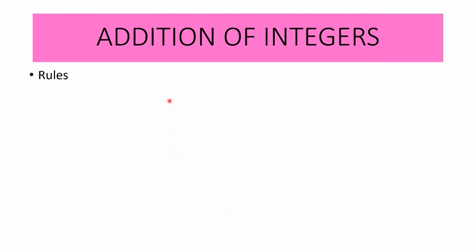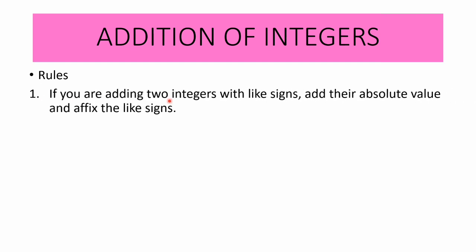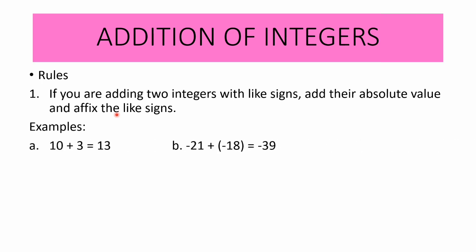Now let us proceed with the addition of integers. The first rule: if you are adding two integers with like signs, add their absolute values and affix or copy the like sign. For example, 10 plus 3 equals 13. We are adding two integers with like signs — both positive — so we add their absolute values, 10 plus 3, giving 13, and affix the positive sign. Therefore, the sum is positive 13.